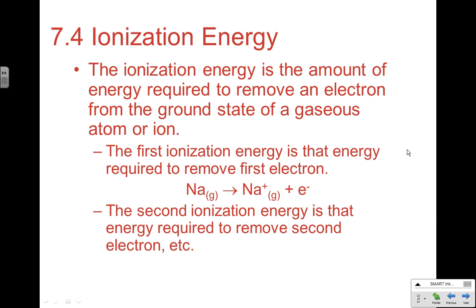Since we have a first ionization, it makes sense that we're going to talk about other ionizations as well, and being able to compare and understand them is an important part. The second ionization energy is the energy required to remove a second electron. So now we've got Na+ — we've already taken out one — and we're looking at the energy required to remove the next one and make Na2+. That doesn't mean sodium is commonly found as an Na2+ ion; I'm talking about how much energy it would take to remove another electron from the sodium ion.